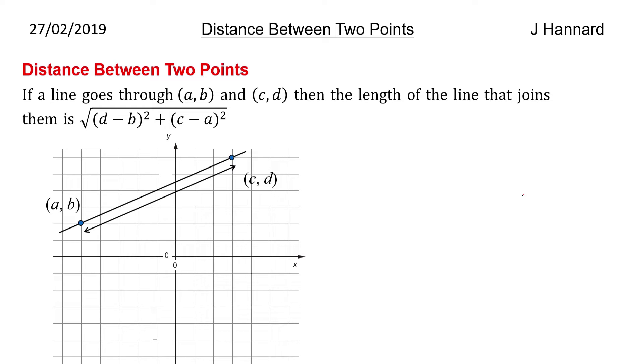If a line goes through two coordinates (a,b) and (c,d), then the length of the line that joins them is the square root of (d-b) squared plus (c-a) squared. That's the maths of it.